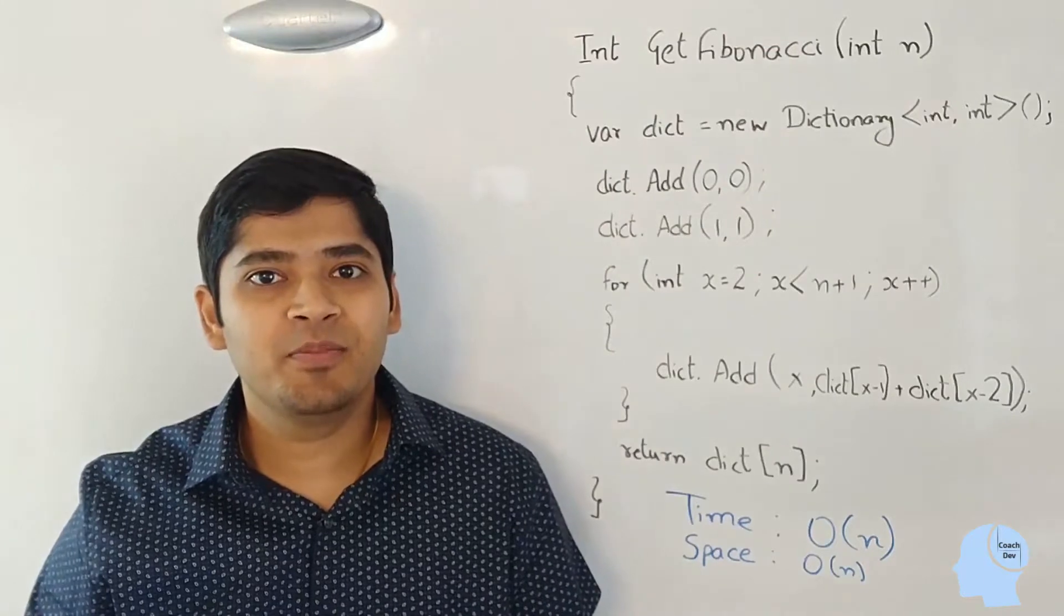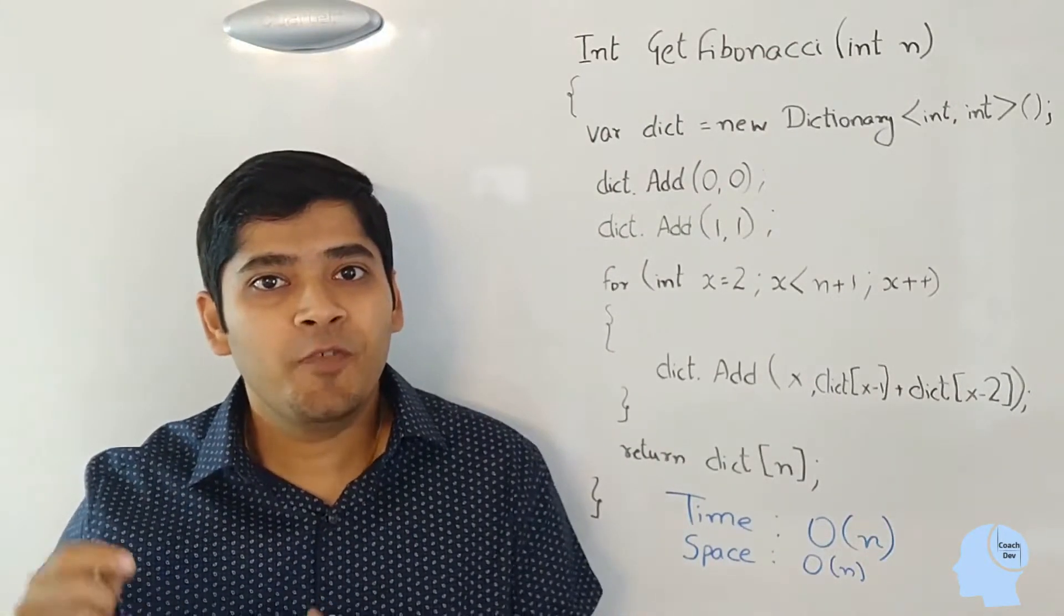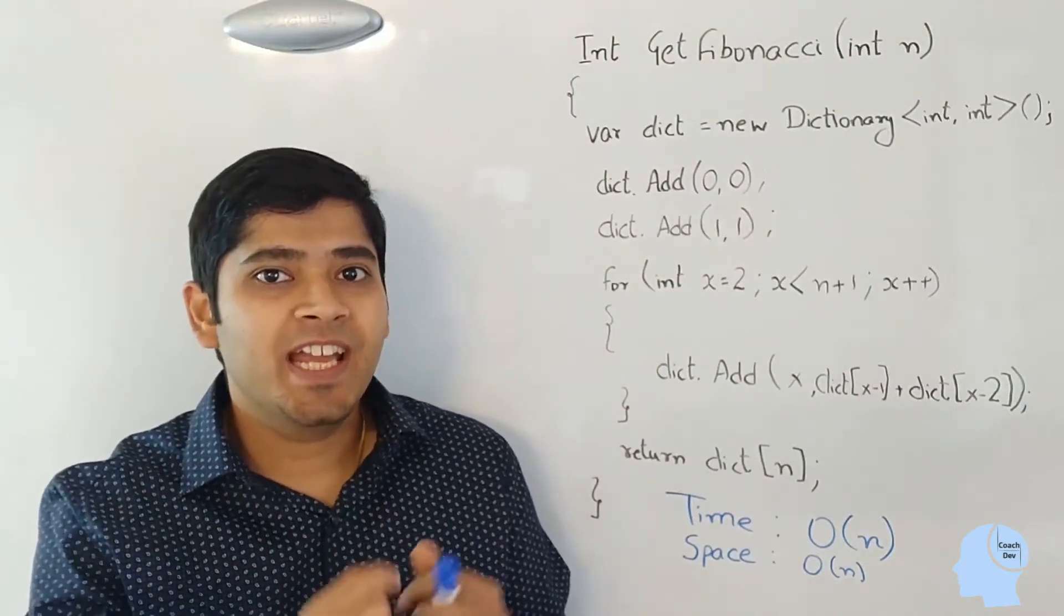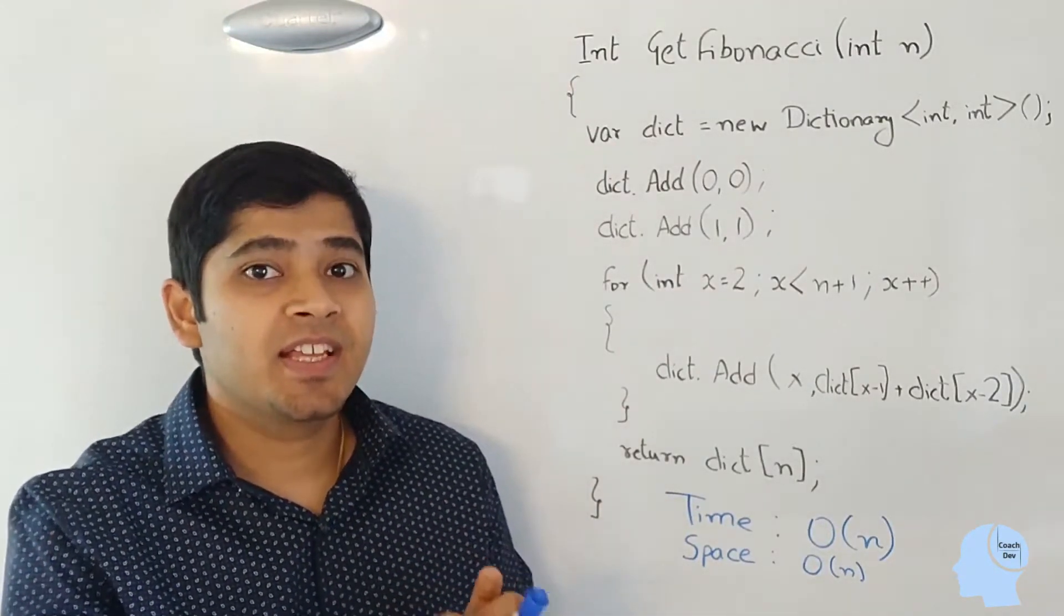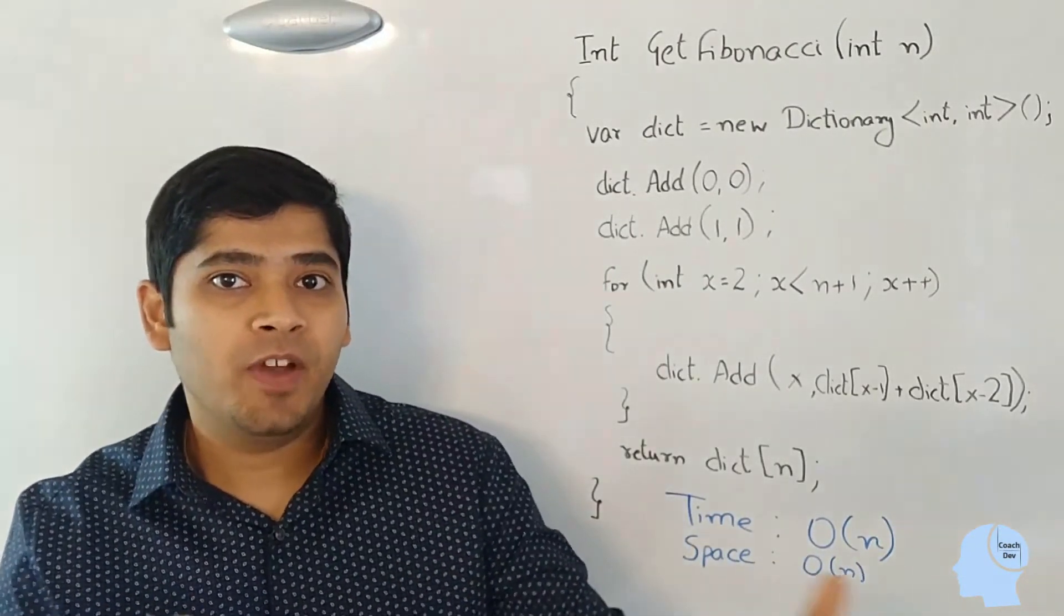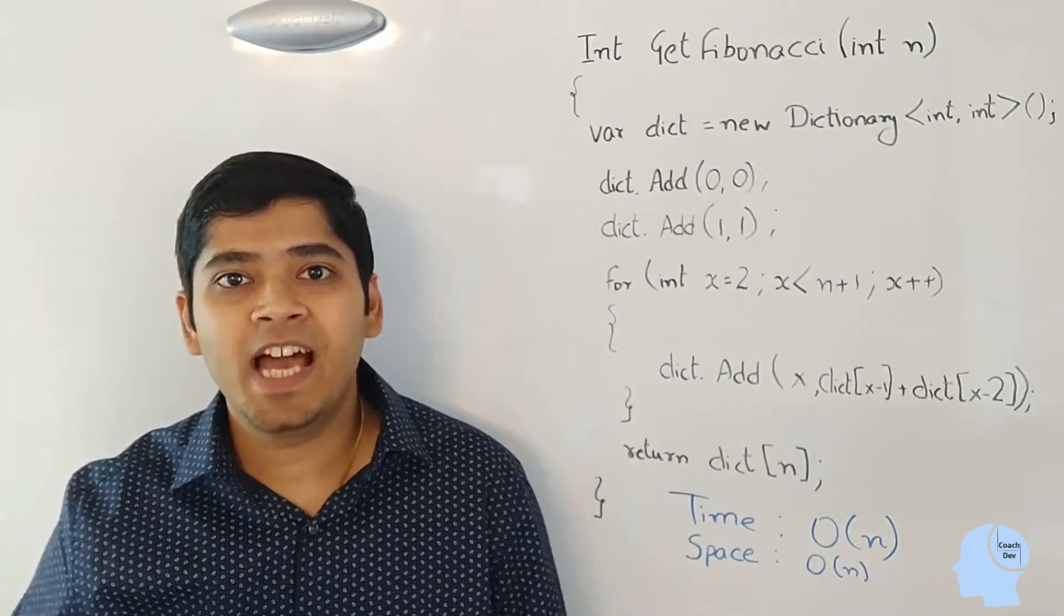The aim of our algorithm is to get the value at index n. So for that value, we just need the values at index n minus 1 and index n minus 2, and we can get rid of all the other values except n minus 1 and n minus 2.